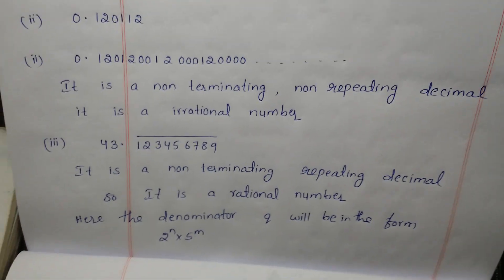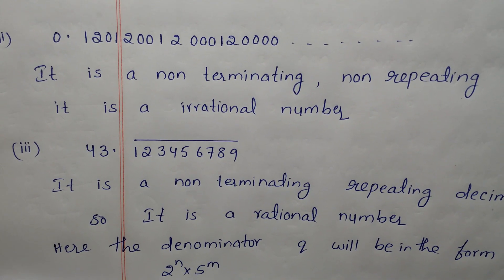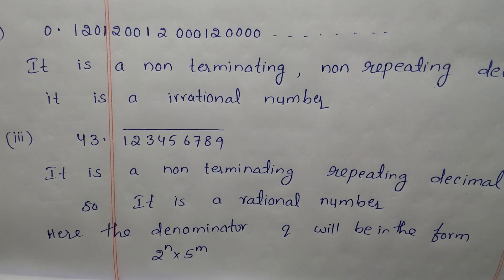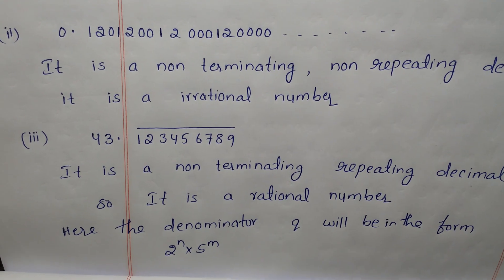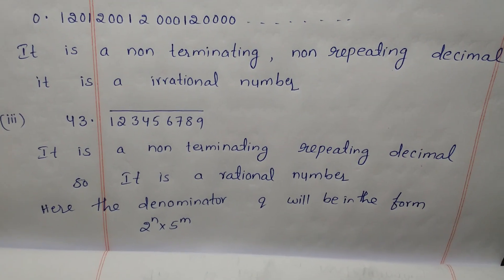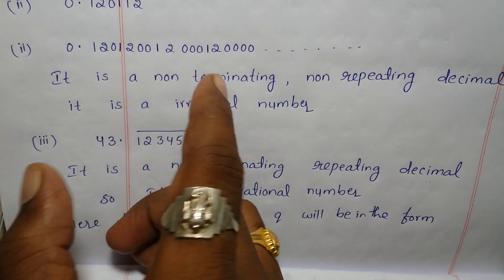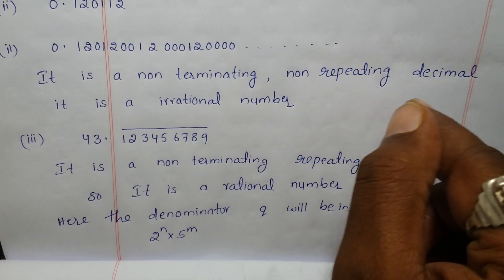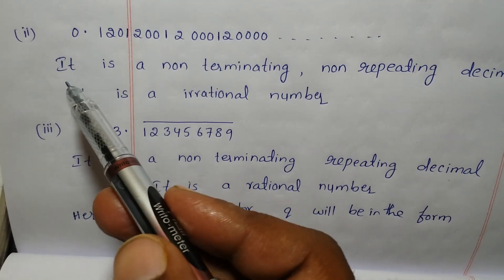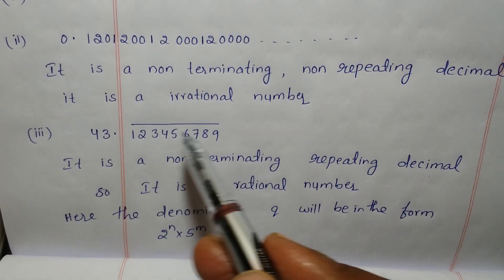Now we will see question number 2. The number is 0.120120012001200... and it is continuing — it is not ending. So it is a non-terminating decimal. It is also a non-repeating decimal; none of the decimals are repeating. The pattern 1201 is not repeating in a fixed cycle. So it is a non-terminating, non-repeating decimal, and therefore it is not a rational number. Non-terminating, non-repeating decimals are called irrational numbers.